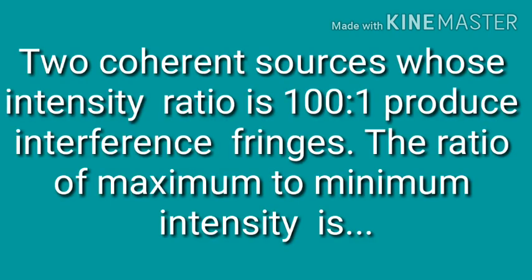The last problem of this assignment is: two coherent sources whose intensity ratio is 100:1 produce interference fringes. The ratio of maximum to minimum intensity is — please solve this problem and write your answer in the comment box.